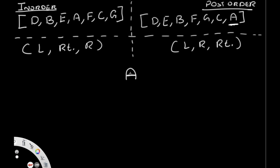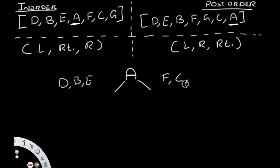Now we can take this root and look for it in our in-order list. We find A in the in-order list. Since in-order is left, root, right — everything to the left of A is part of the left subtree, so D, B, and E are all on the left. F, C, and G are all on the right. Let's solve the left part first. We know it contains D, B, and E, but we don't know their order. To find that, we use our post-order traversal.